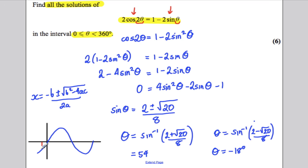One of our solutions is negative 18. So we'll have another one here and another one here. And one of our solutions was 54, so we'll clearly have another one here.